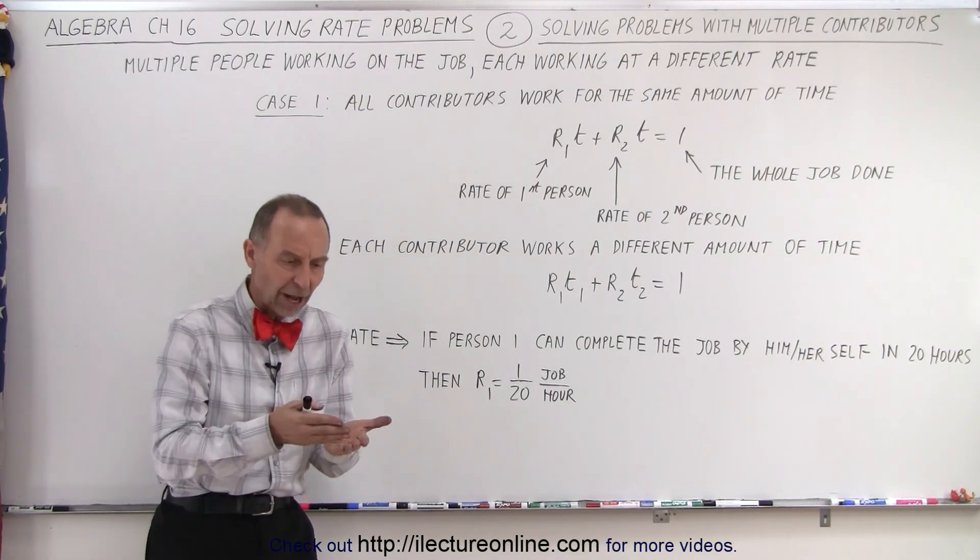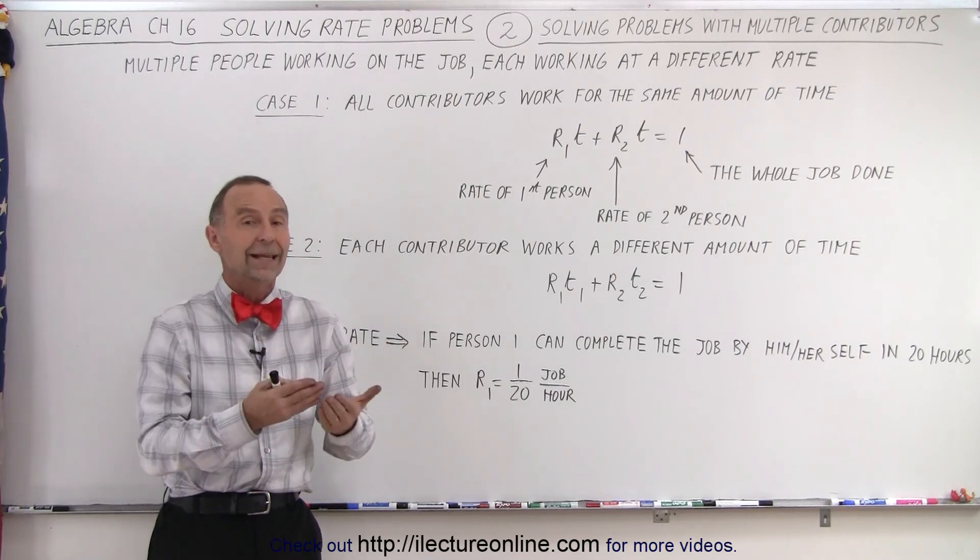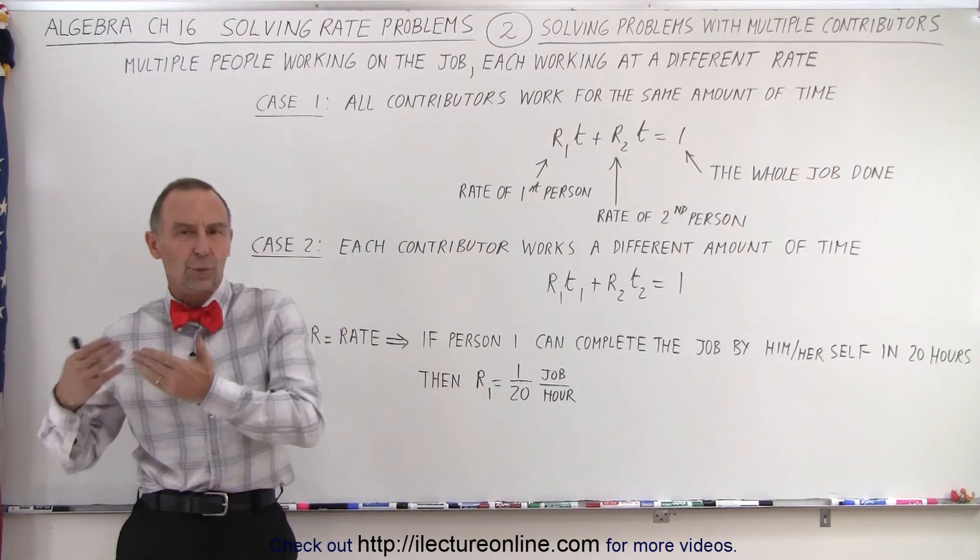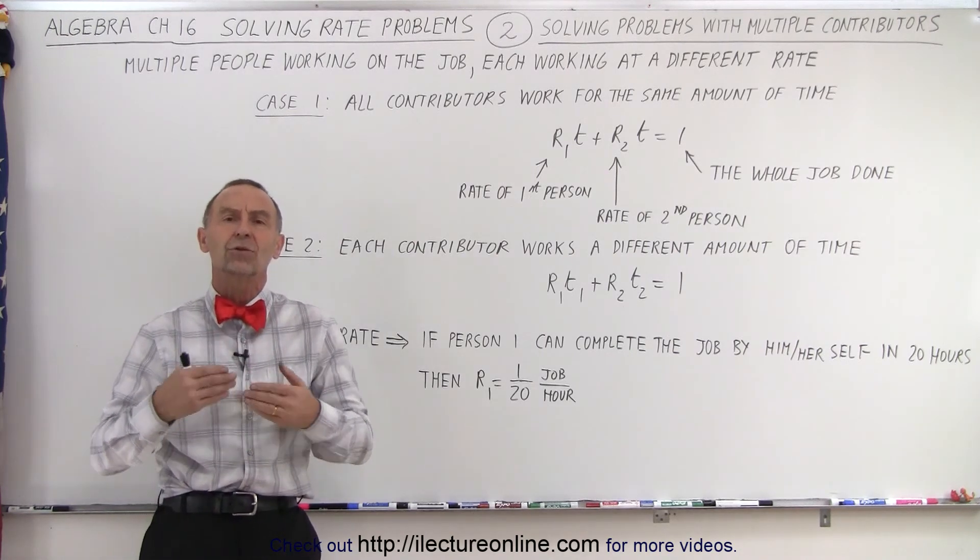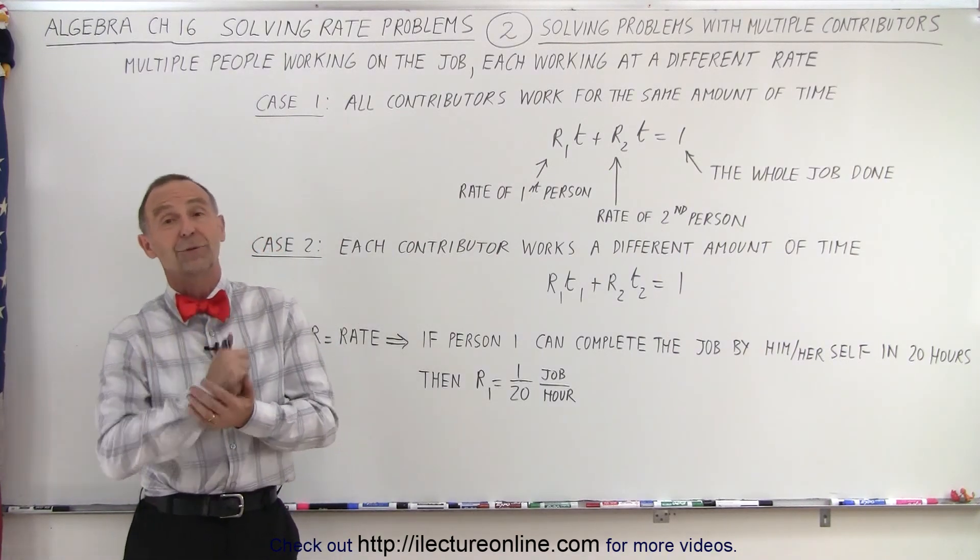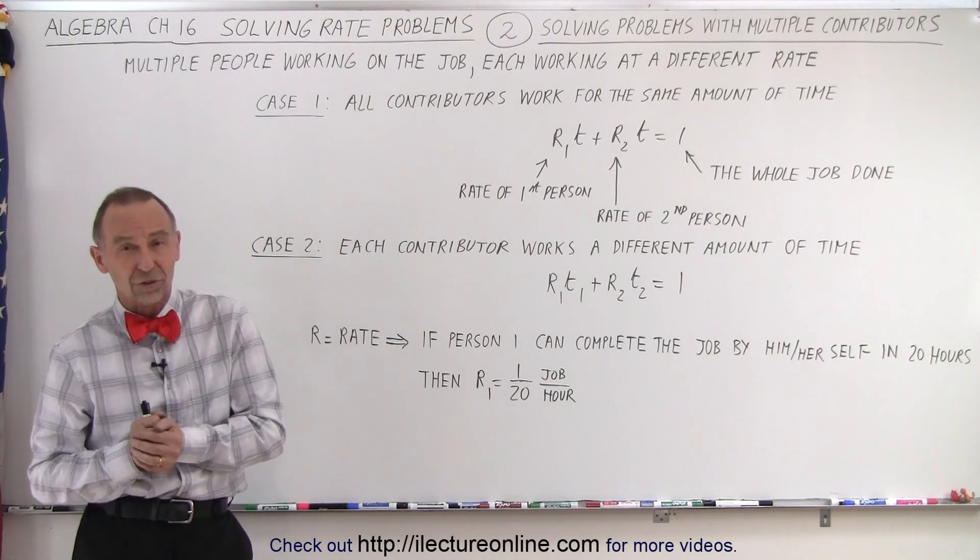For example, two people working on the same job - one person can do the job in 10 hours, the other person can do the job in 12 hours if they work by themselves. But together, how long will it take to do the job together? Assuming, of course, they don't get in each other's way and slow each other down.